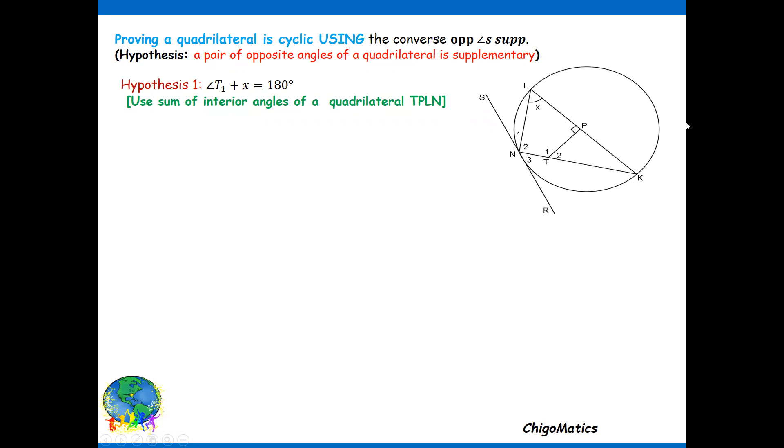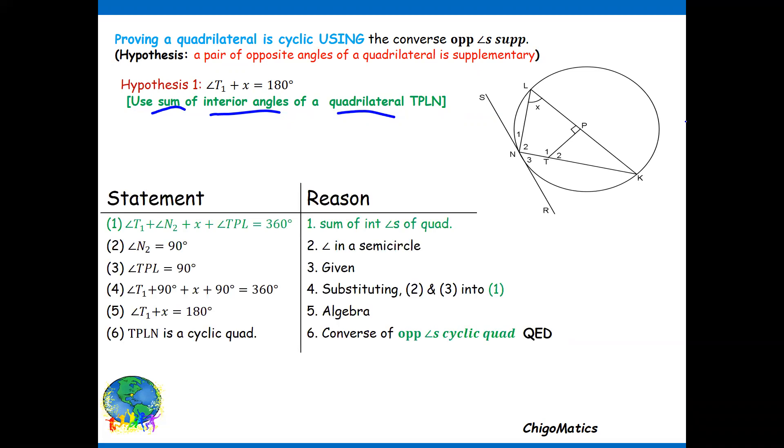So I have added, I get this. Then obviously from the given information, N is equal to 90 subtended by the diameter KL. Then angle TPL is given as 90 degrees.